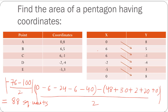Let me repeat the whole process once again. First, write down all the coordinates and again write down the first point's coordinate. Write coordinates of A, B, C, D, E, then again A. Don't forget this step — people generally tend to forget it. Then find all the cross products of x, find all the cross products of y. Add the cross products of x, add the cross products of y, subtract both, and divide by 2. The modulus of this value gives the area. In this case we got 88 square units. This is a really useful method to calculate the area of any regular polygon whose coordinates are specified.